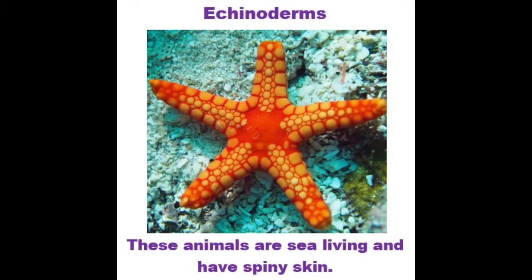Echinoderms seems like quite a hard word, but it just means spined skin. Animals which have spined skin and have no backbone are considered echinoderms. These animals include starfish, like you can see in the picture, sea cucumbers and sea urchins.